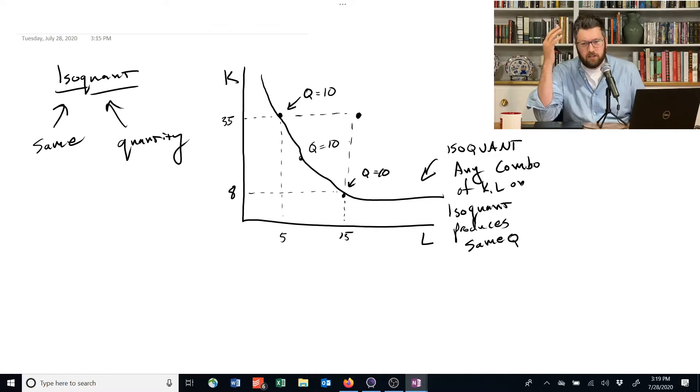Well, we know that we're going to be able to make at least 10 units of food. Because if we only had 5 laborers and 35 units of capital, we would be able to make 10. Now we have an extra 10 laborers, so we can just tell them to go sit in a corner and make the same amount. Or we can put them to work and probably make even more.